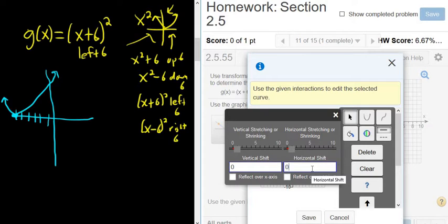So we went left 6. So I'm going to put negative 6, because we went left 6. If it had been right 6, I would have put positive 6. Then I'm going to come down here and click save, and hope it works. Let's see.